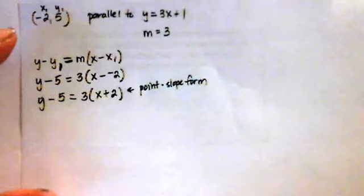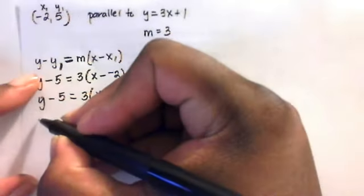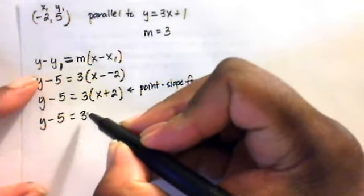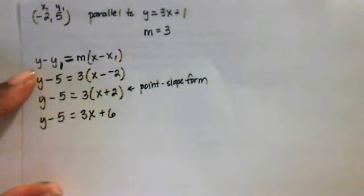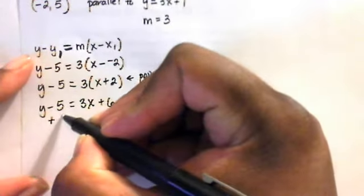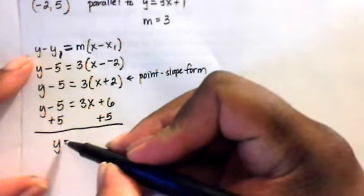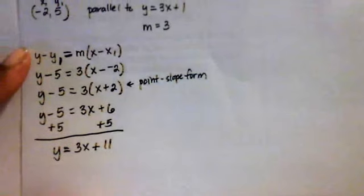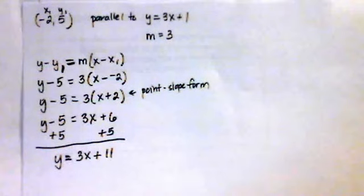From that, we can write the equation in slope-intercept form. Bringing down y minus 5, using the distributive property on the right side: 3 times x is 3x, plus 3 times 2 is 6. To get y by itself, I add 5 to both sides. So the equation in slope-intercept form is y equals 3x plus 11. That is the equation of the line passing through negative 2, 5 and parallel to y equals 3x plus 1.